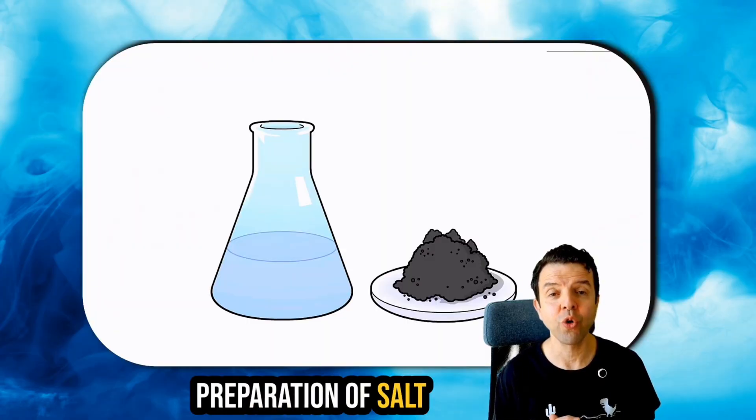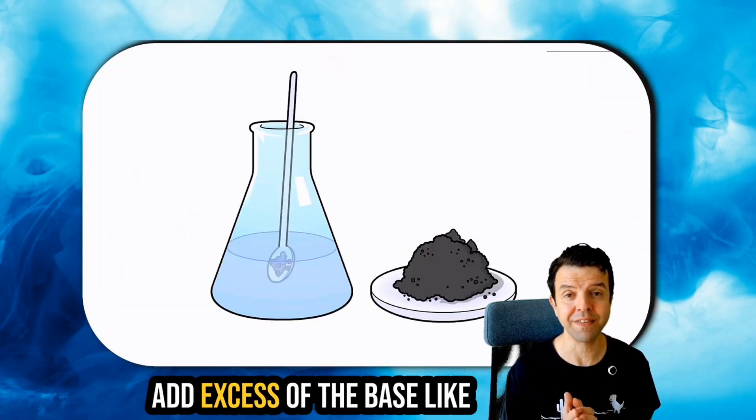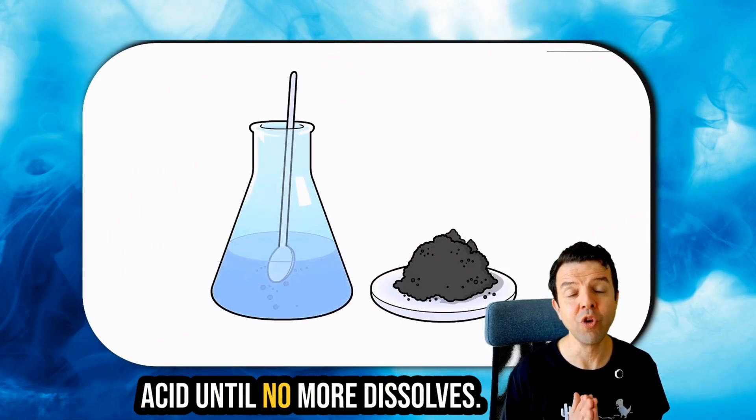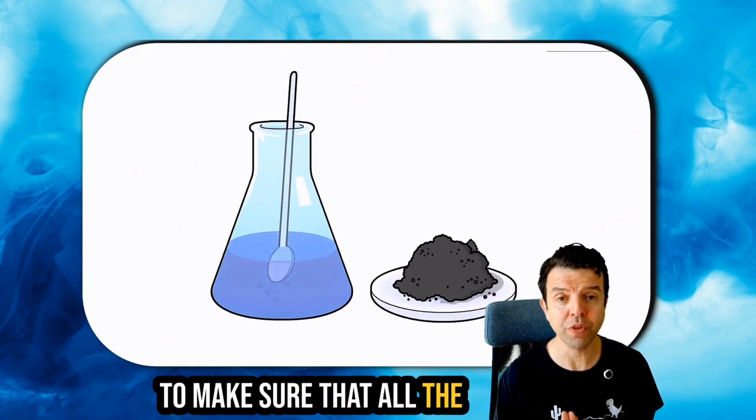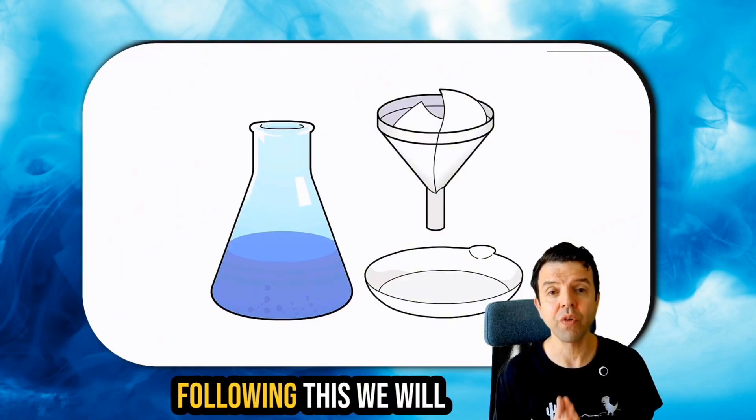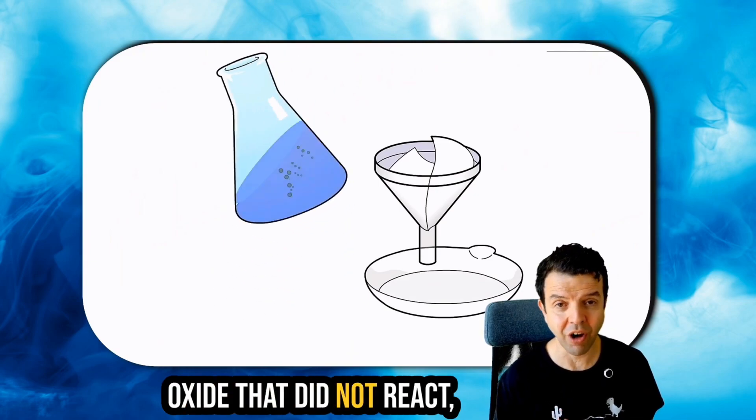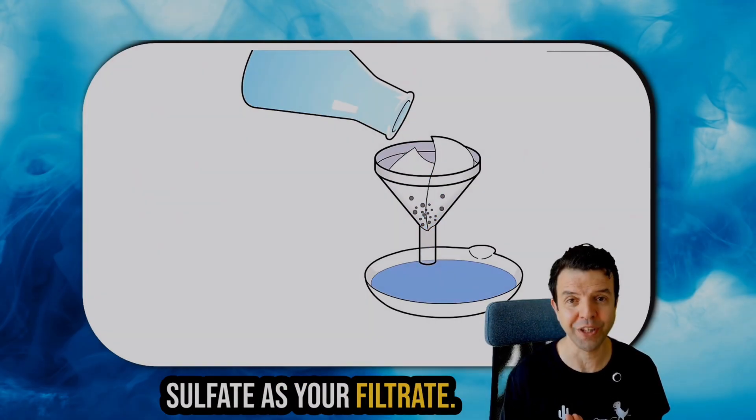Let's start with the preparation of salt by neutralization. In step one, you're going to add excess of the base like copper oxide to sulfuric acid until no more dissolves. The point here is we're trying to make sure that all the sulfuric acid is reacting. Following this, we will filter out all the copper oxide that did not react, leaving behind copper sulfate as your filtrate.